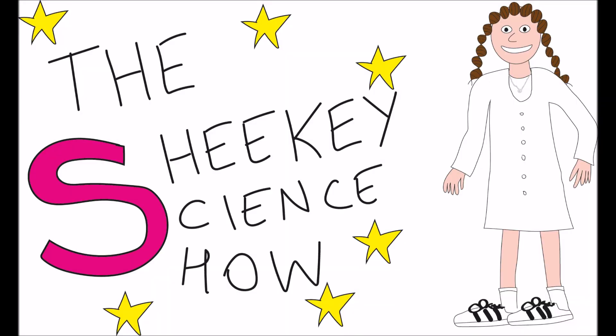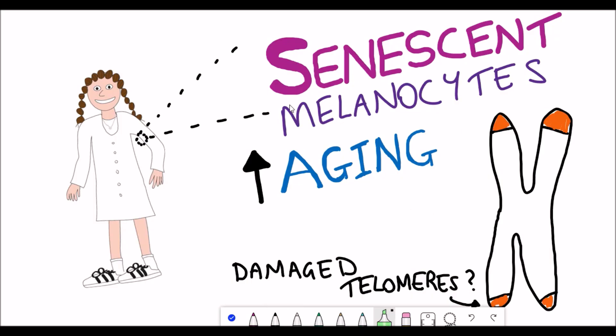Hello and welcome to the Shiki Science Show where in this video we're going to talk about senescent cells, in particular senescent skin cells known as melanocytes and how they can drive skin aging and the relationship between that and telomeres.